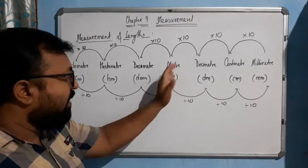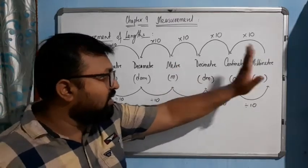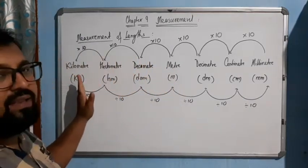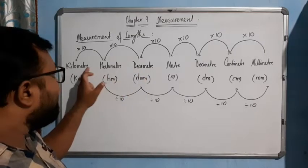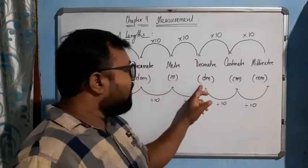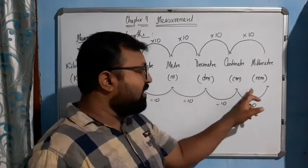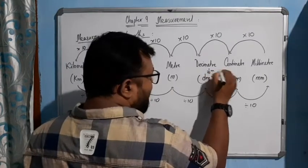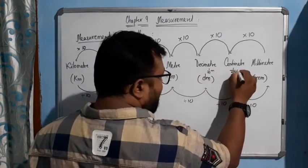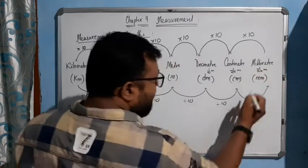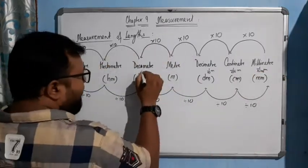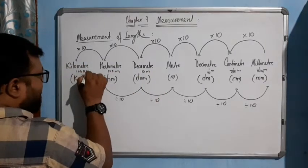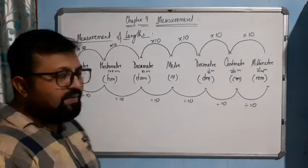The meter is the standard unit and falls in the middle. Below it: decimeter is 1/10 of a meter, centimeter is 1/100 of a meter, and millimeter is 1/1000 of a meter. Above it: decameter is 10 meters, hectometer is 100 meters, and kilometer is 1000 meters.